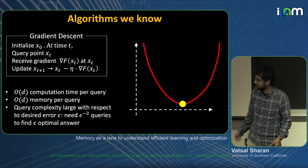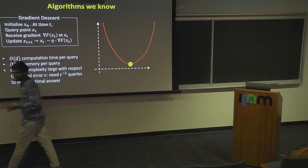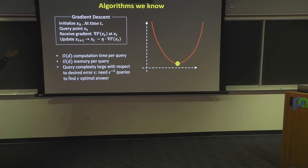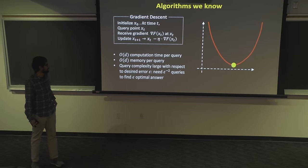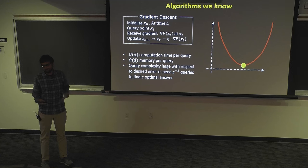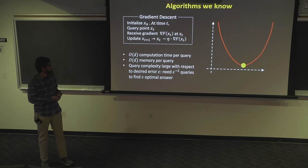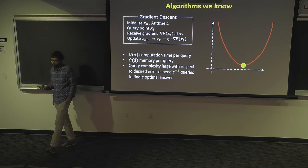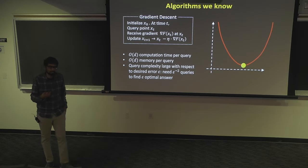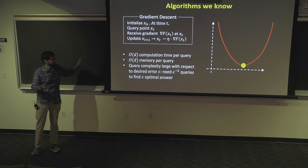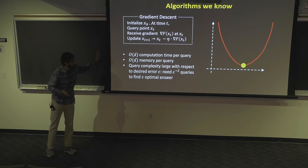Gradient descent is very efficient. It uses only order-d computation time per query — all you need is to take a step in the direction of the gradient, which if you're working in d dimensions only needs d time. You also only need to store one current iterate, so order-d memory — you don't need to keep around any history. The query complexity can be large with respect to the desired error epsilon: if you want to find a point which is epsilon-suboptimal compared to the true minimizer, you need one over epsilon squared queries.